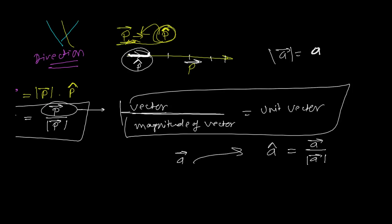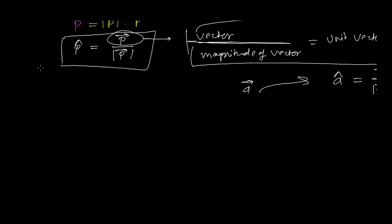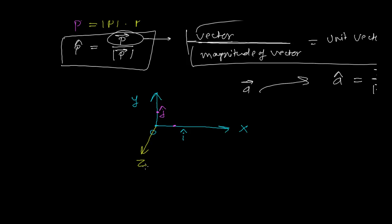In a coordinate plane, for one dimension we have just the x-axis and its unit vector is represented by i-cap. In two dimensions we also have the y-axis, whose unit vector is j-cap. If we add the z-axis for three dimensions, its unit vector is k-cap.